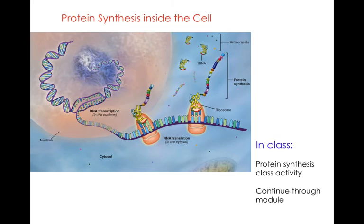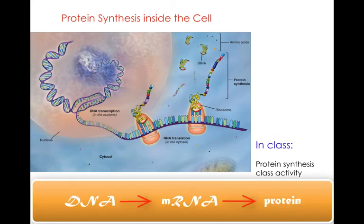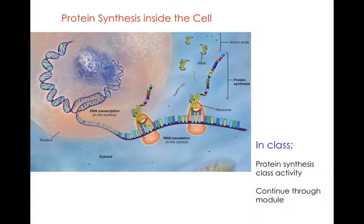What we're going to do in class is a protein synthesis activity. I'm not going to go through this slide right now, but we're going to have an activity where you will see how DNA gets transcribed onto the messenger RNA, the messenger RNA moves out into the surrounding cytoplasm of the cell, travels to a ribosome, and how it's on these ribosomes that amino acids come together to make protein. Thank you.